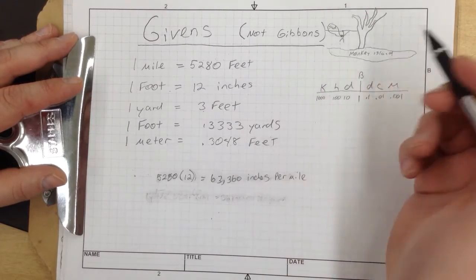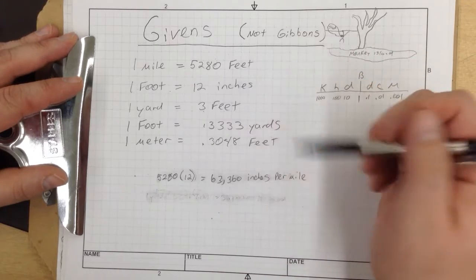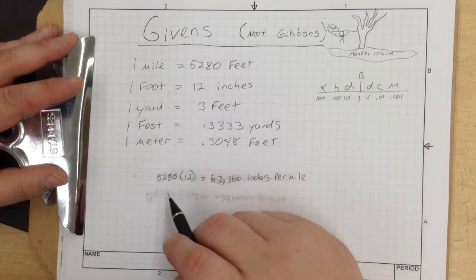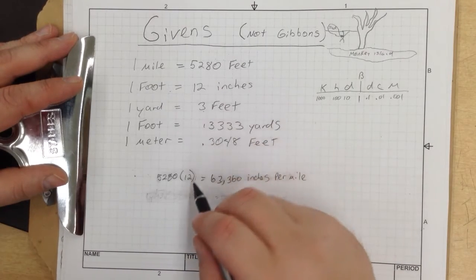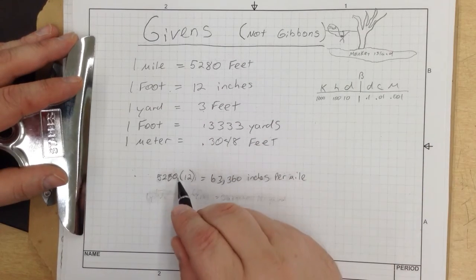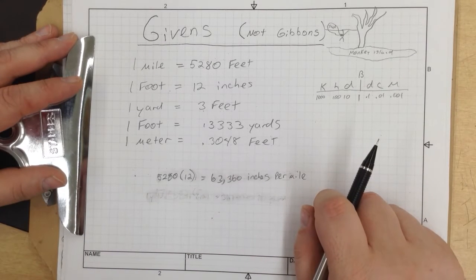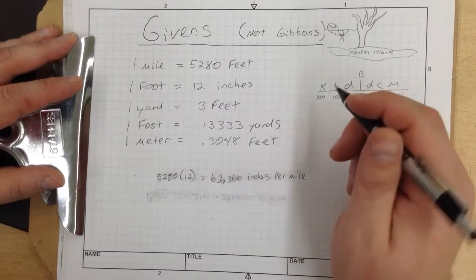Let's talk about how many inches are in a mile. We know that there's 5,280 feet in a mile and 12 inches per foot. When we multiply these together, that gives us 63,360 inches per mile.